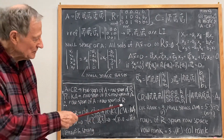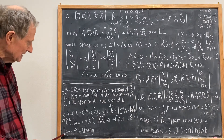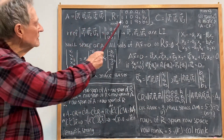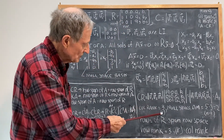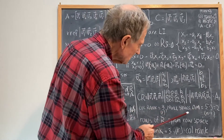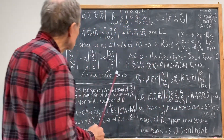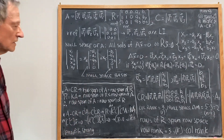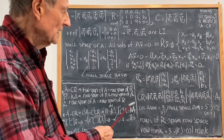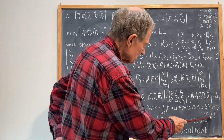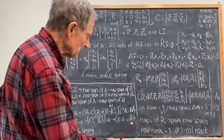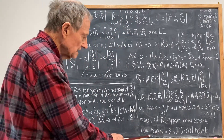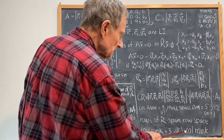So the information we've gotten from this dissection: the column rank of A equals the number of pivot columns, which is 3, or in general R. The null space dimension is 2, or in general N minus R. The rows of R span the row space of A, and the row rank of A equals 3, which equals R, which equals the column rank.